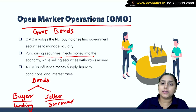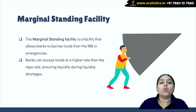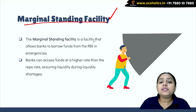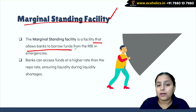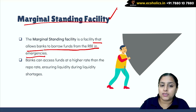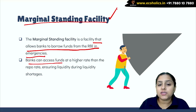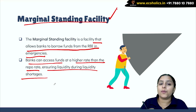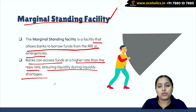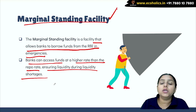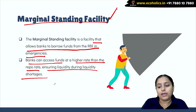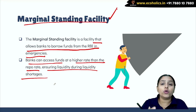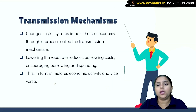Marginal Standing Facility is a facility that allows banks to borrow funds from RBI in emergencies. Banks can access funds at a higher rate than the repo rate, ensuring liquidity during shortages. Because it is for emergencies, the rate is higher, so excess access to liquidity is reduced. This can be used to bring contraction in monetary policy.